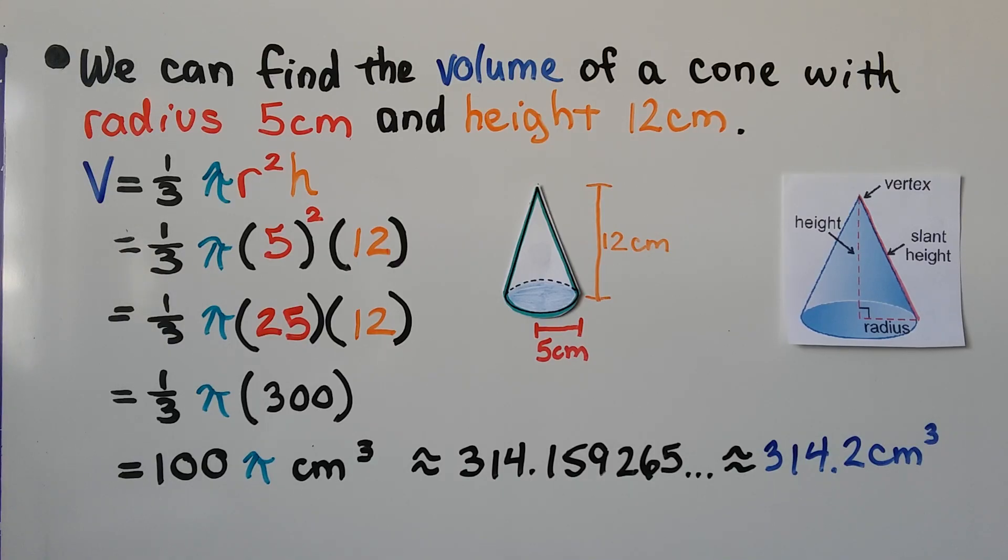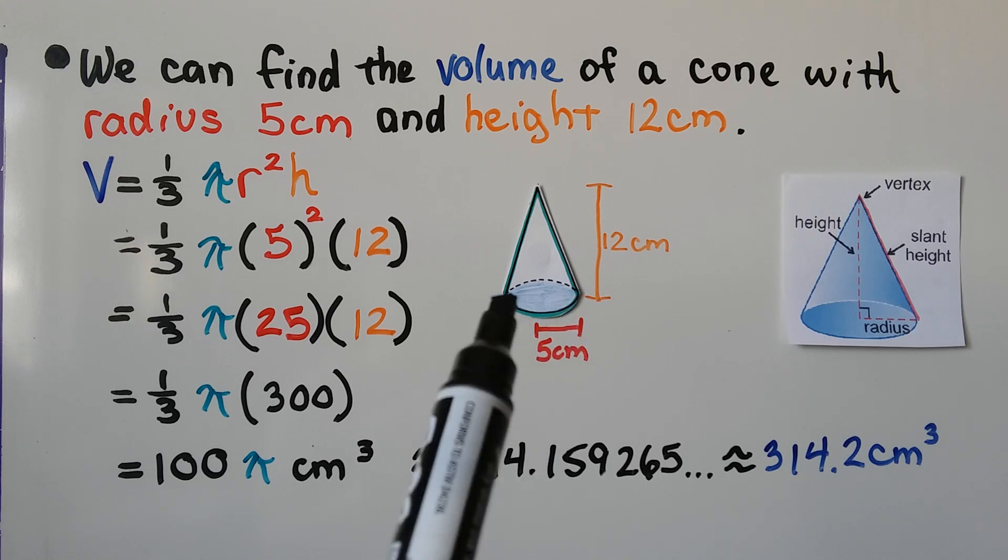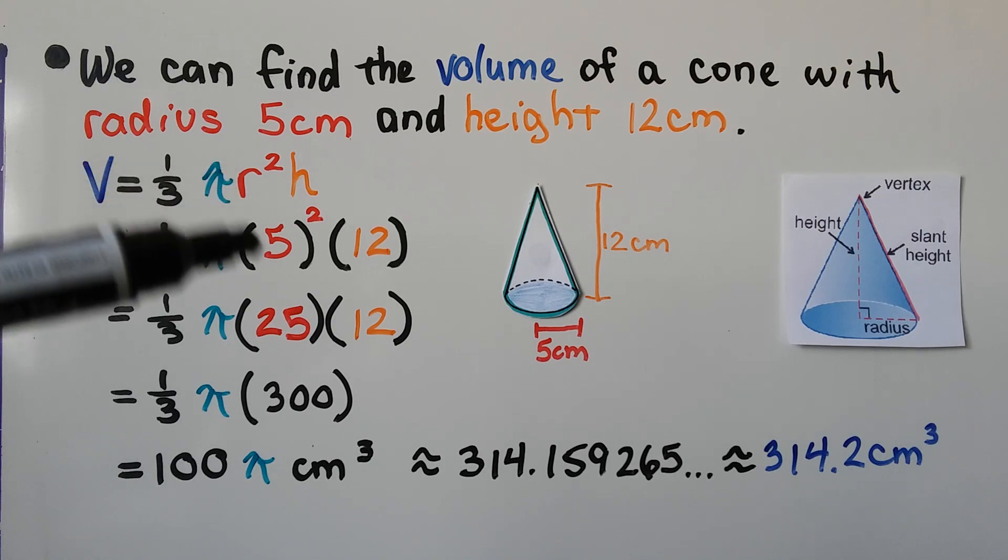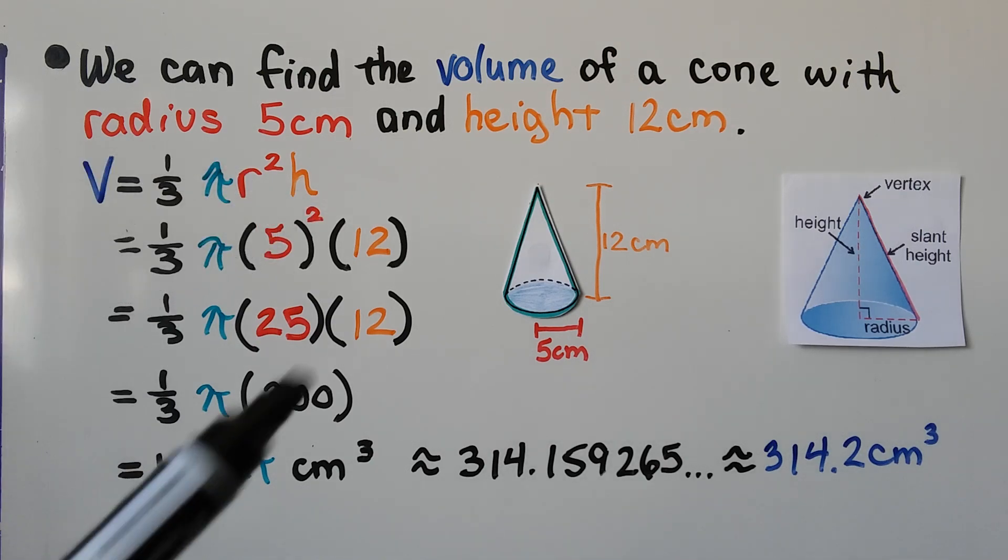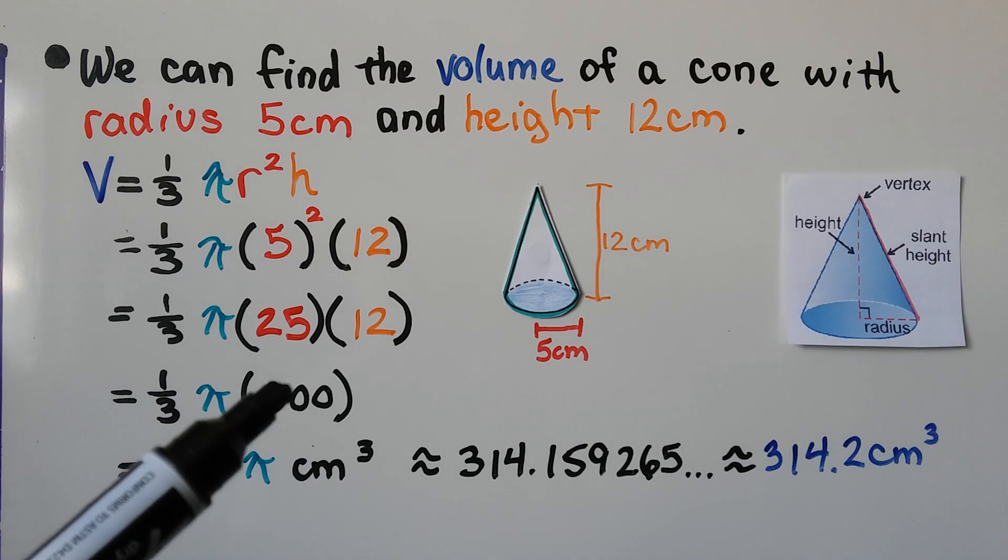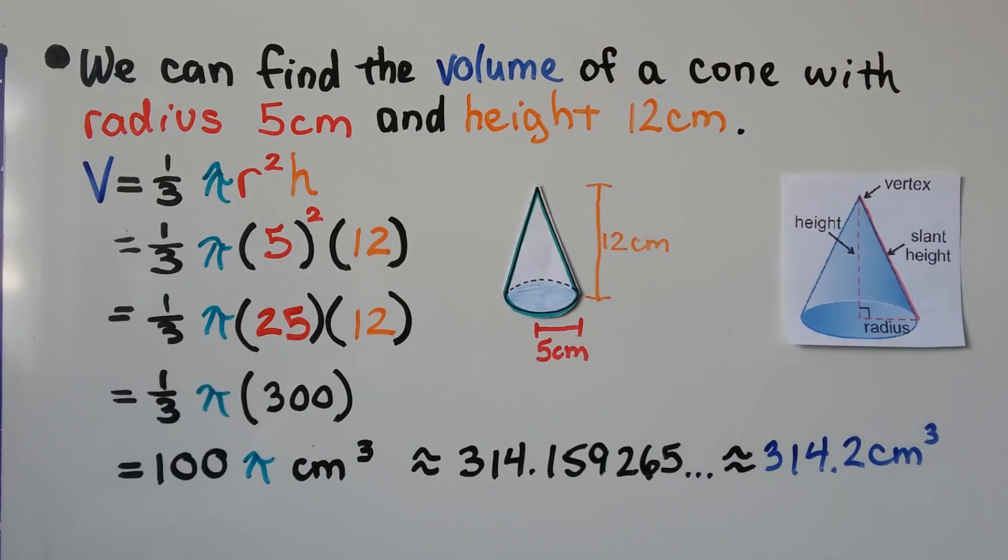We can find the volume of a cone with radius 5 centimeters and height 12 centimeters. Remember, the radius is half the diameter, so it's from the center point of the base to this side. Using the formula, we would do 5 squared, and that would be times height of 12. That would give us 25 times 12, which is 300. So we have one-third pi times 300. That would be 100 pi centimeters cubed, which would be approximately 314.159. We could round this to the nearest tenth as 314.2 centimeters cubed.